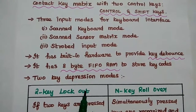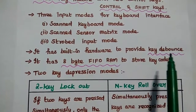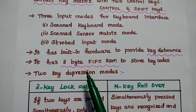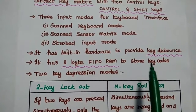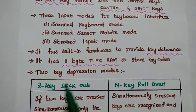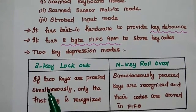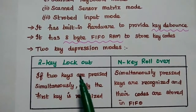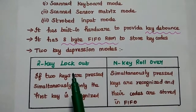8279 has built-in hardware to provide key debounce. It has an 8-byte first-in first-out RAM to store key codes. There are two key depression modes available: the first is 2-key lockout, and the second is N-key rollover.